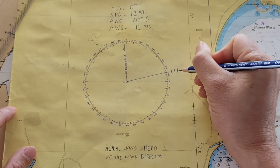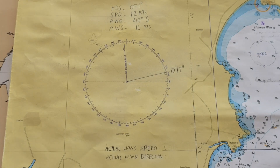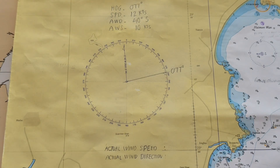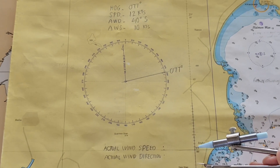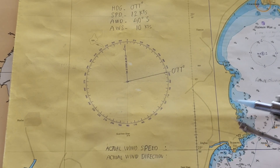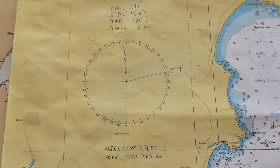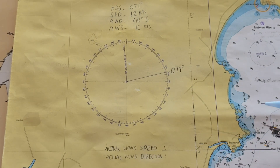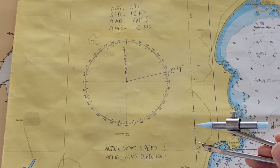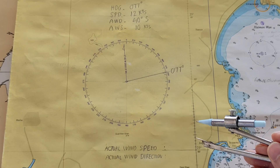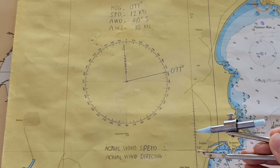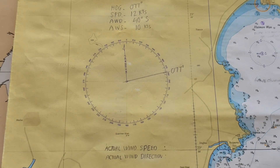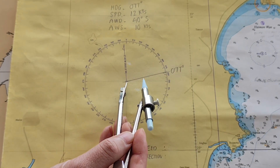This is our heading 077 degrees. For the speed, I will use the compass to measure that on the latitude dividing scale. Each small dot can represent one or two knots — I will make one dot equal two knots: two, four, six, eight, ten, twelve. So 12 knots is marked here, and I will mark that on the heading line from the center.